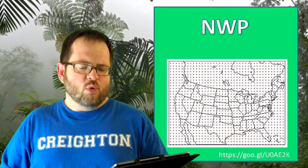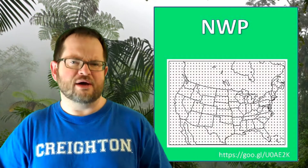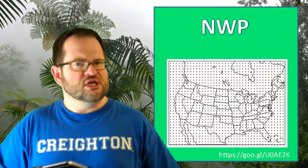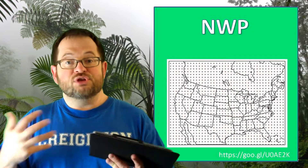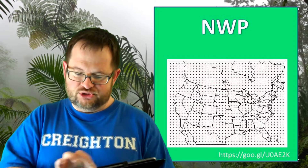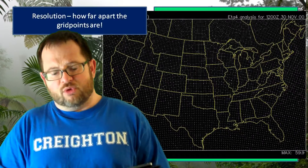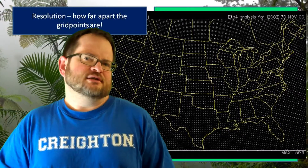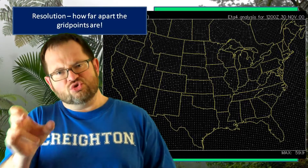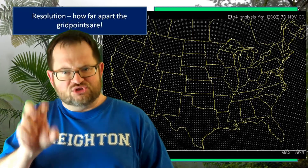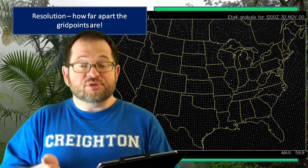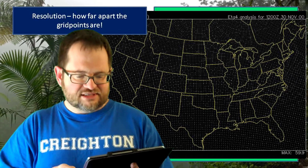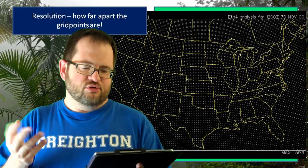There are a lot of different numerical weather prediction models run by different entities like the National Weather Service and various universities. This particular one is called ADA-4. It's a computer model — a numerical model of the atmosphere — and there's a little white dot at every location where the model grid points are. You can see those locations on the map, and at every one of those dots, the model is computing the seven primitive equations to make forecasts at those individual locations.